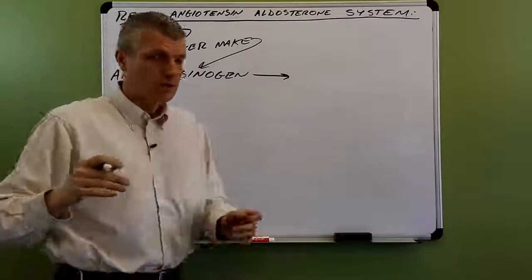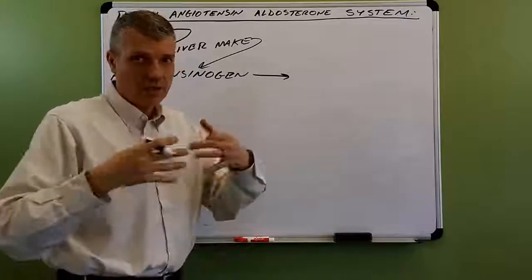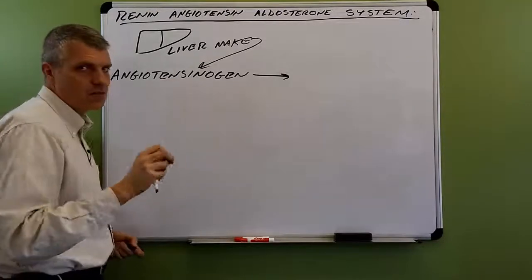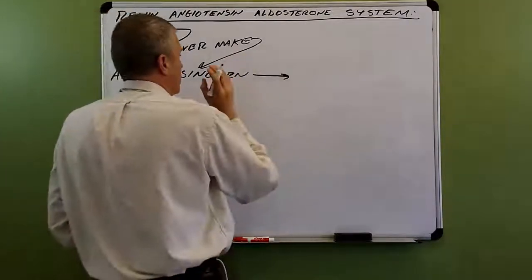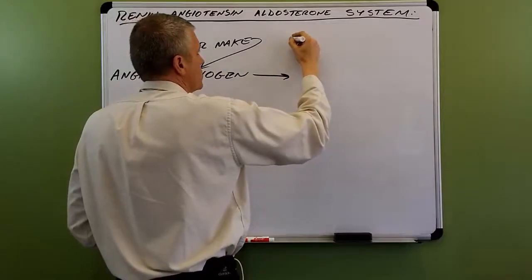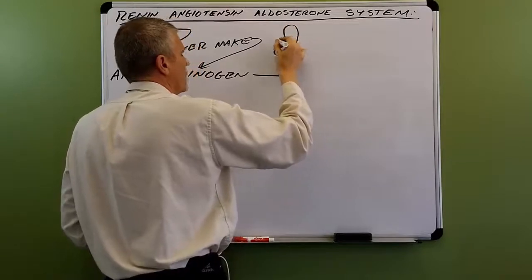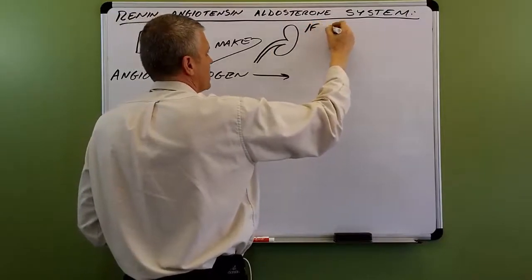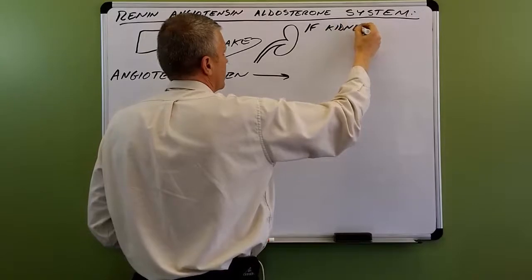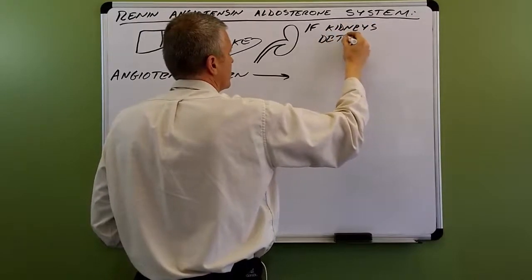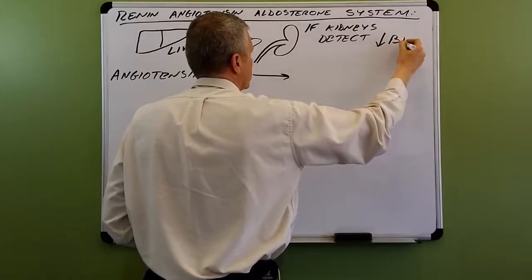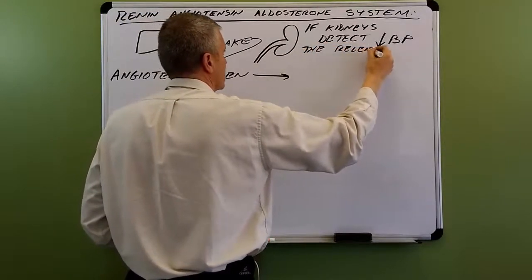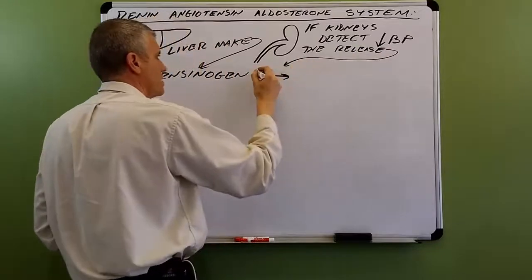Angiotensinogen is floating around in your bloodstream — it's always there. The liver keeps it at normal, healthy levels. You could think of angiotensinogen as being ready in case it's needed. Here's when it's needed: if the kidneys detect a drop in blood pressure, they will release an enzyme called renin.